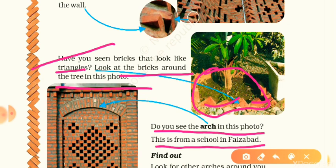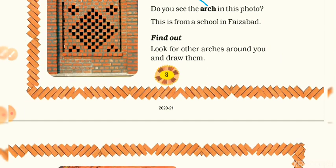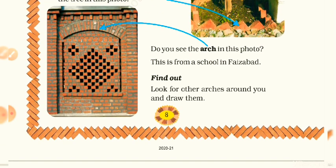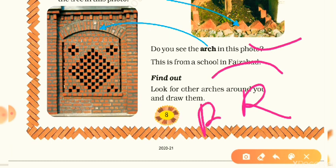Now do you see the arc in this photo? This is from a school in Faizabad. After the jharokha pattern we have the arc pattern — this type of shape is known as an arc. Look for other arcs around you and draw them. In your daily life you see arc shapes in rainbows, in bridges, and in many other things.